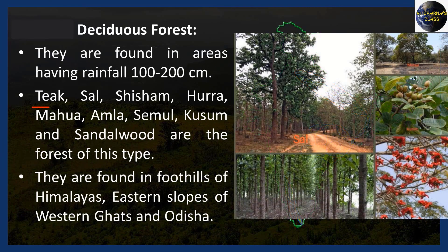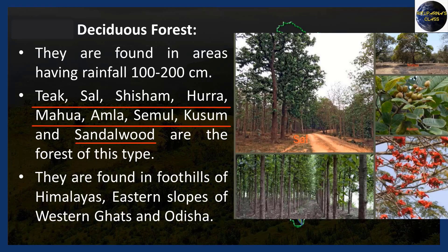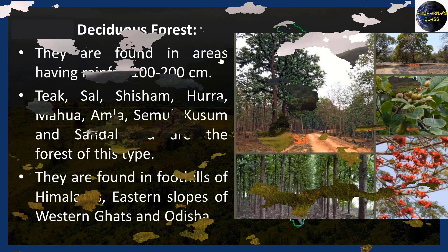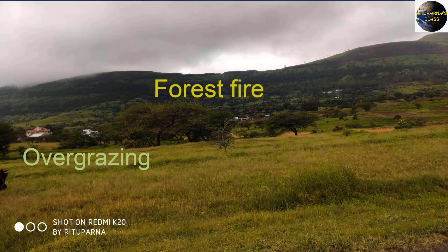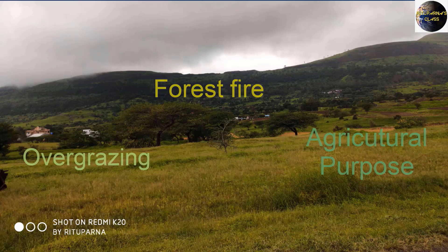Teak, Sal, Shisham, Hura, Mahua, Amla, Simul, Kusum, and Sandalwood are the main trees of these forests. These forests have suffered from overgrazing and forest fire, and a large proportion has been cleared for agricultural purposes.